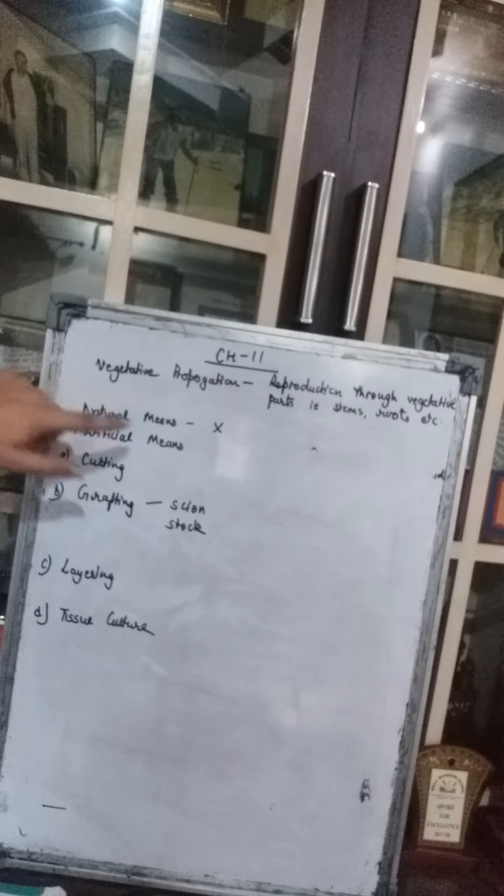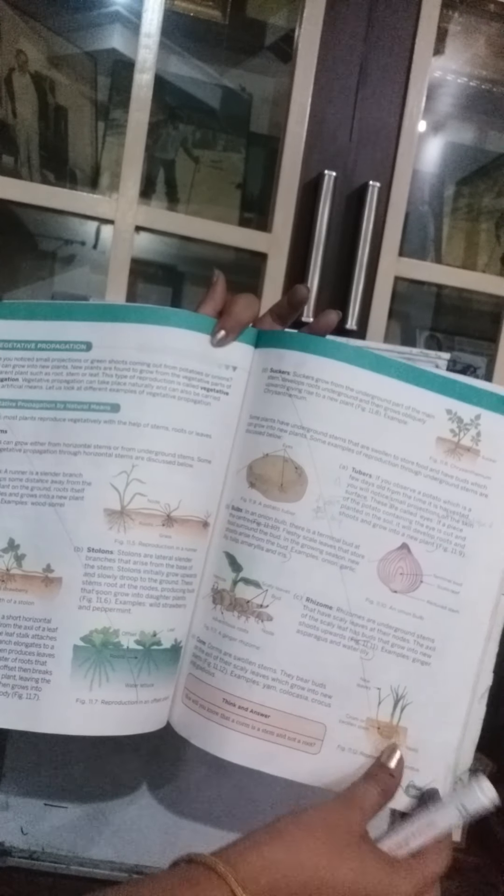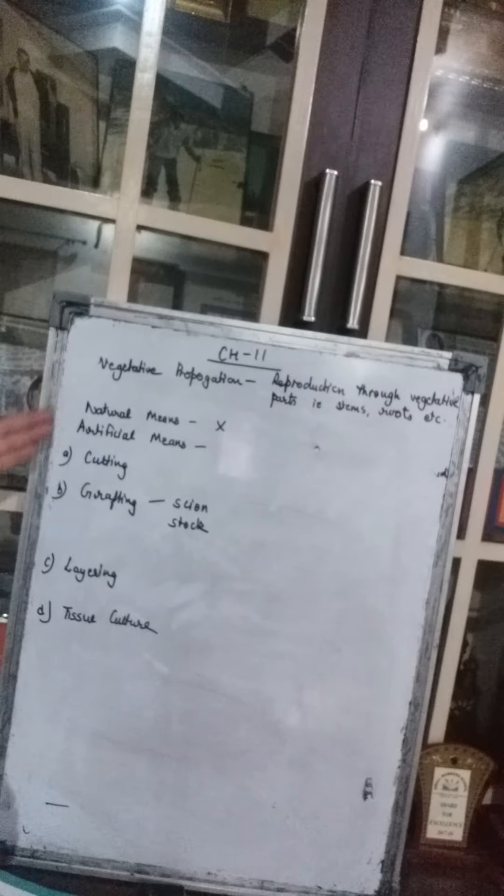Vegetative propagation by natural means is cancelled — we will not study that portion in this class. We will study vegetative propagation by artificial means. There are four different methods through which plants can give rise to new plants through their vegetative parts — either through stems, roots, or other parts.